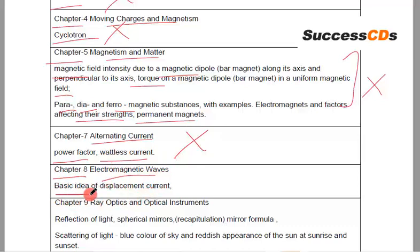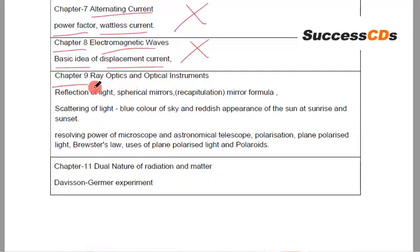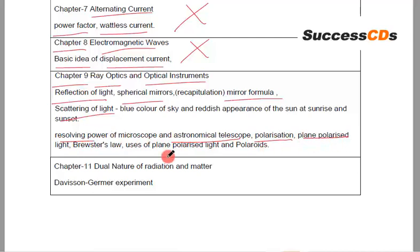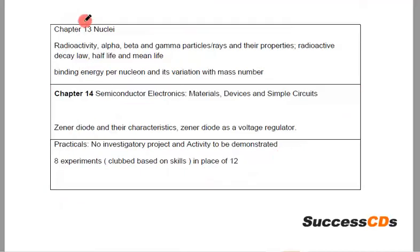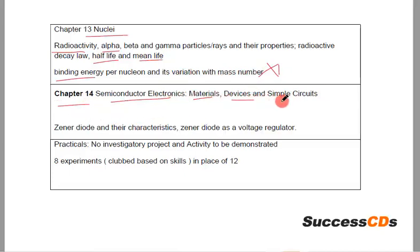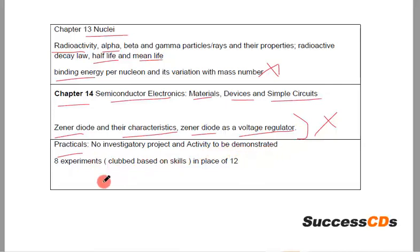Chapter 8, Electromagnetic Waves: basic idea of displacement current — deleted. Chapter 9, Ray Optics and Optical Instruments: reflection of light, spherical mirrors, mirror formula, scattering of light, resolving power of microscope and astronomical telescope, polarization, plane polarized light, Brewster's law, and uses of plane polarized light and polaroids — deleted. Chapter 11, Dual Nature of Radiation and Matter: Davisson-Germer experiment — deleted. Chapter 13, Nuclei: radioactivity, alpha, beta and gamma particles and their properties, radioactive decay law, half-life, mean life, and binding energy per nucleon and its variation with mass number — deleted. Chapter 14, Semiconductor Electronics: Zener diode and their characteristics, and Zener diode as a voltage regulator — deleted. In practicals: no investigatory project and activity to be demonstrated; 8 experiments in place of 12.